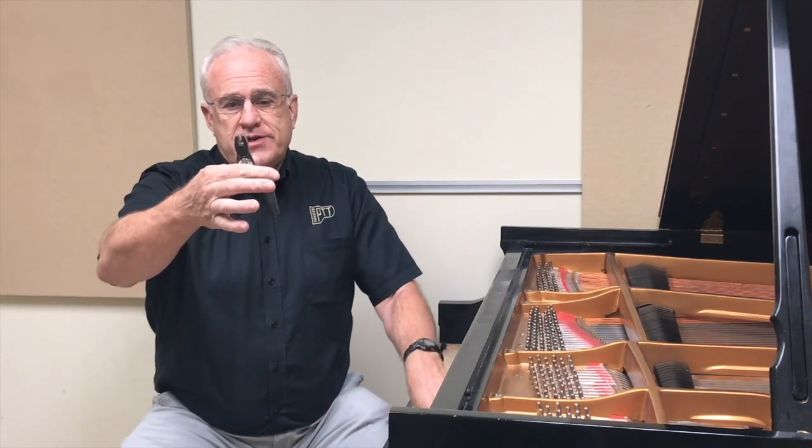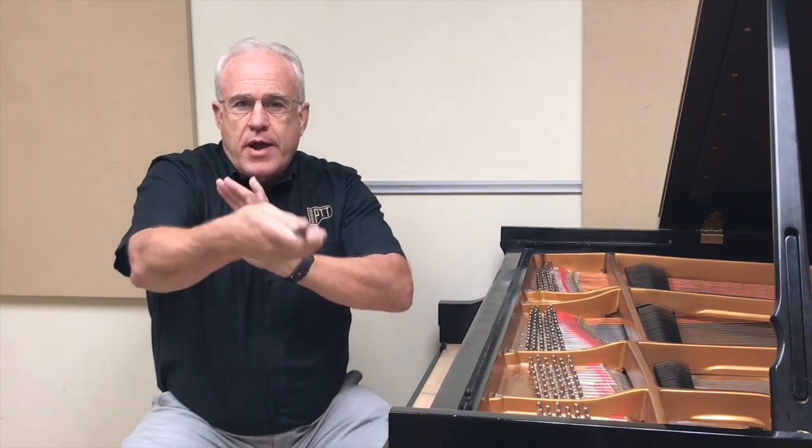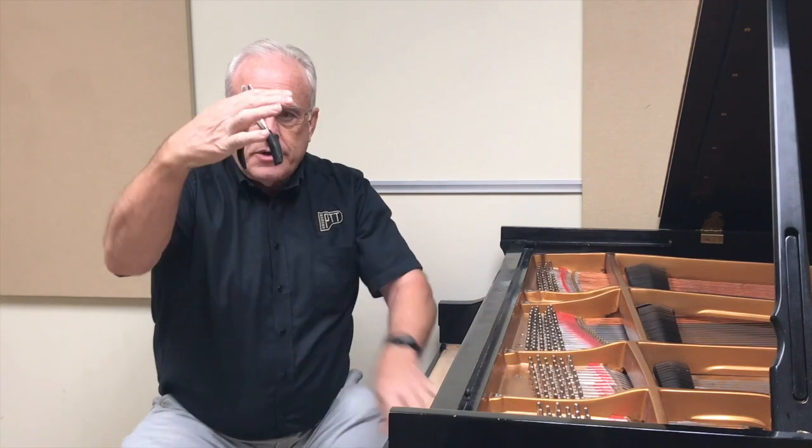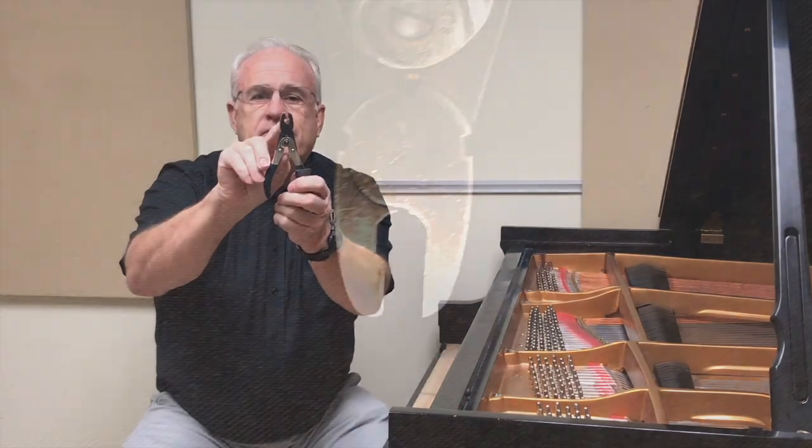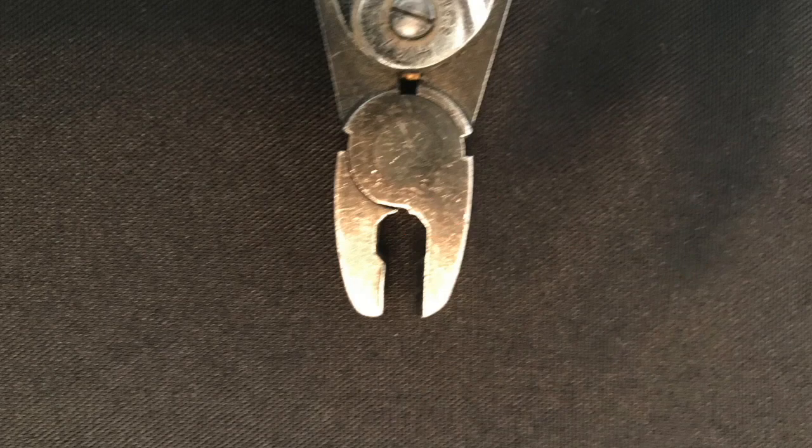These wire bending pliers I put a piece of tape on here so that I know which direction it's going to move and that way I can do it without looking. Notice it has an offset here and that's for upright pianos so I can get around the bridle strap wire in uprights.